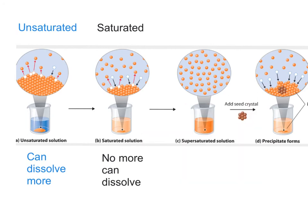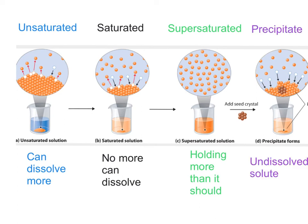Once something falls out of your super saturated solution, we call it a precipitate. Precipitate comes out in little crystals of solute. So just to review: you can make solutions that are unsaturated, meaning they can dissolve more solute if you give them enough time and you're patient; saturated solutions, which are holding the maximum amount of solute that they can hold; super saturated solutions, which are somehow holding more than they should because we very carefully balanced it; and precipitate, which is whatever undissolved solute you have at the bottom of your container.